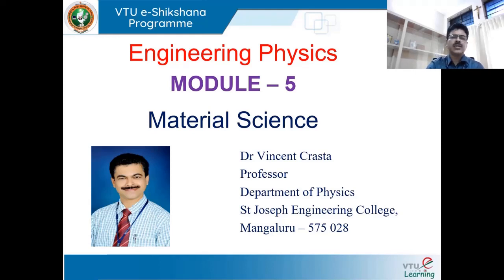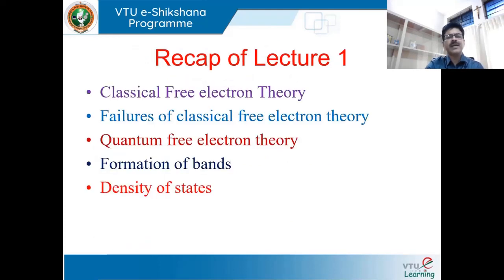Today I am taking this lecture on the material side. I would like to recap what has been done in my previous class. In lecture 1, I spoke about the classical free electron theory, which was explained by Drude and Lorentz. The conductivity of metals is based on the valence electrons or free electrons present in the outermost orbit of the atom. However, this theory failed for a number of reasons, and we observed two important failures of the classical free electron theory.